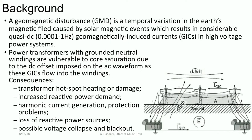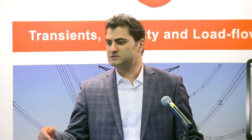Here is quickly a background in case you are not very familiar with GMD. A geomagnetic disturbance is essentially a temporal variation in Earth's magnetic field caused by solar storms. During these solar storms, a significant amount of charged particles are released into space, and the interaction of these charged particles with Earth's atmosphere results in significant changes in Earth's magnetic field.